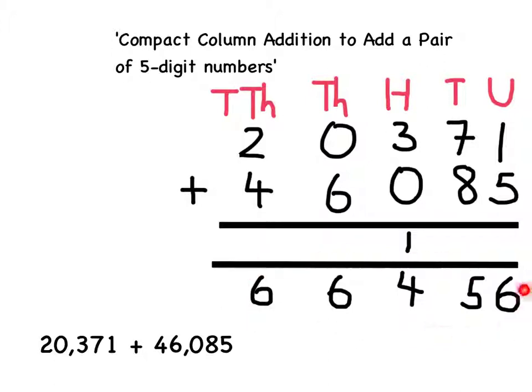These numbers here give me my answer which I must write out as part of the original question. So 6, 6, 4, 5, 6 which gives me 66,456 and I'm going to use a comma to separate the thousands and the hundreds to make my number easier to read.